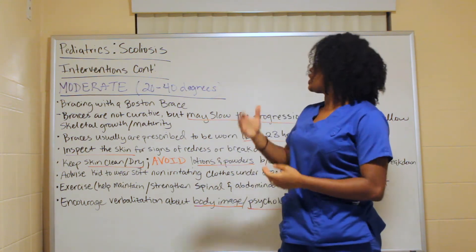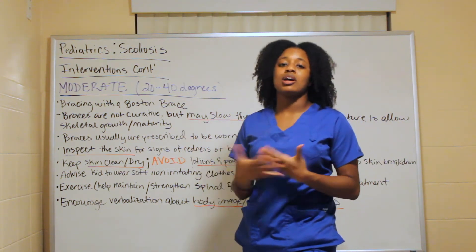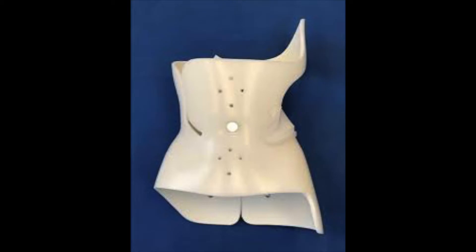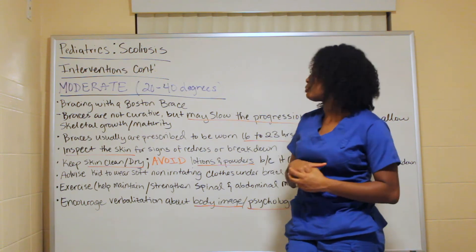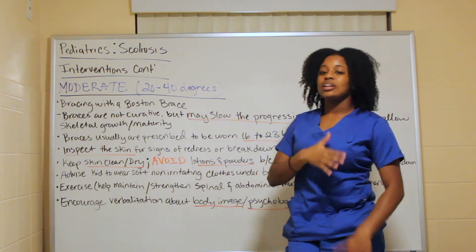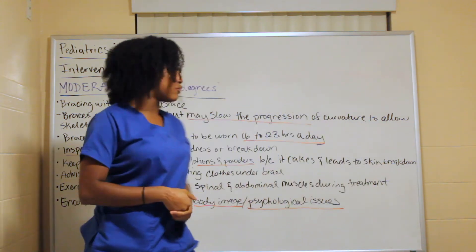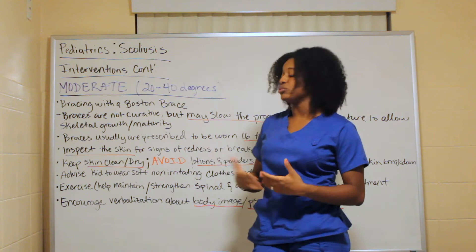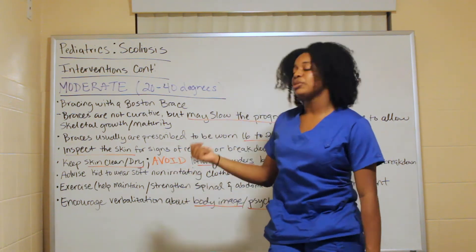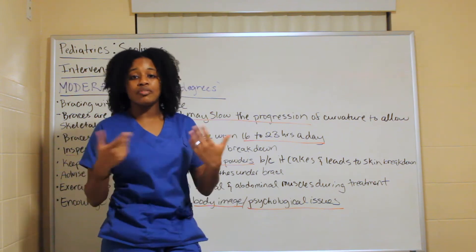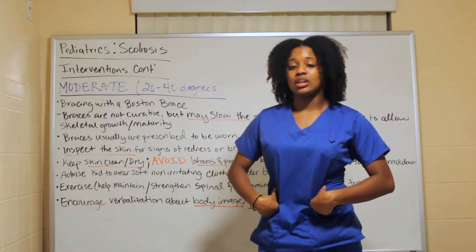For moderate scoliosis — 20 to 40 degrees — bracing is the best intervention, specifically the Boston brace. Braces are not curative but they help slow down the progression of the curvature and allow the body to go through skeletal growth and maturity in a healthier way. Braces are typically prescribed to be worn 16 to 23 hours per day.